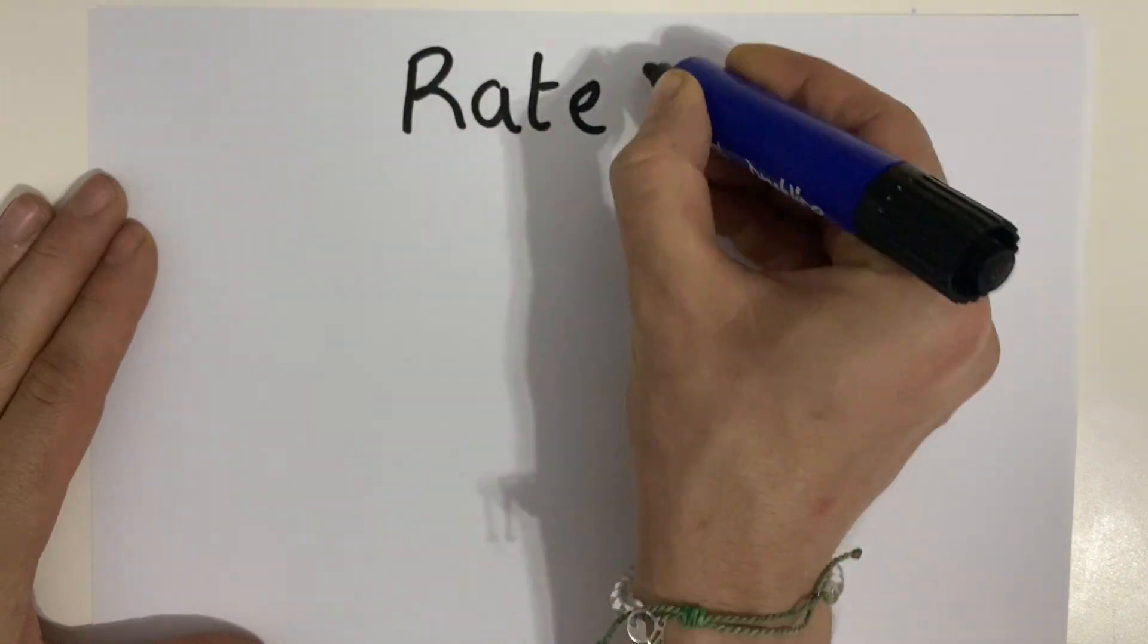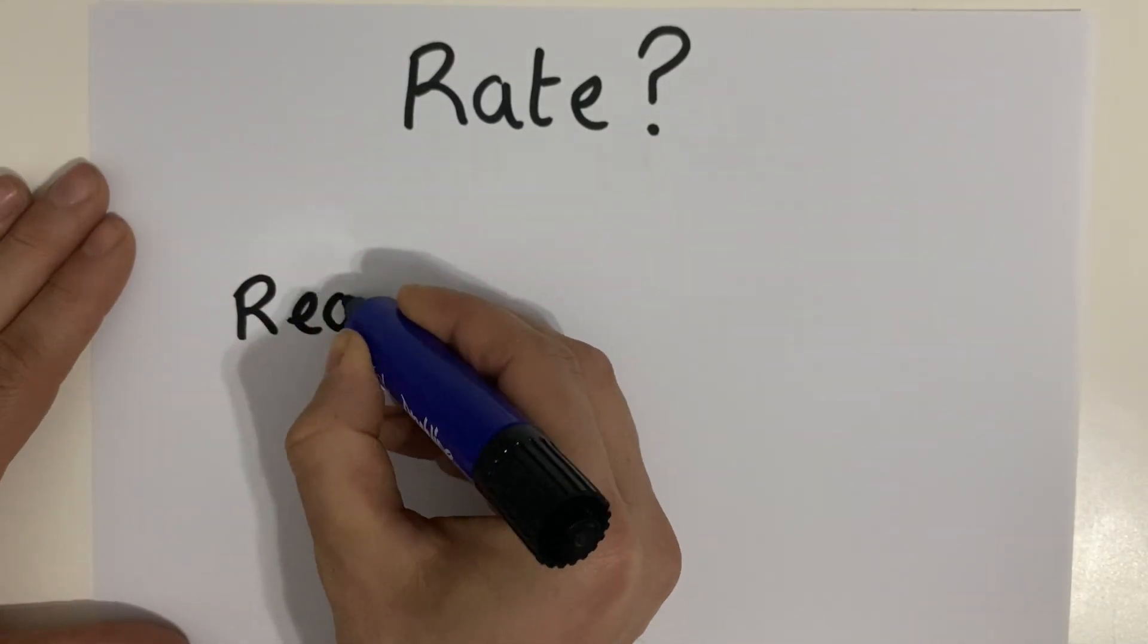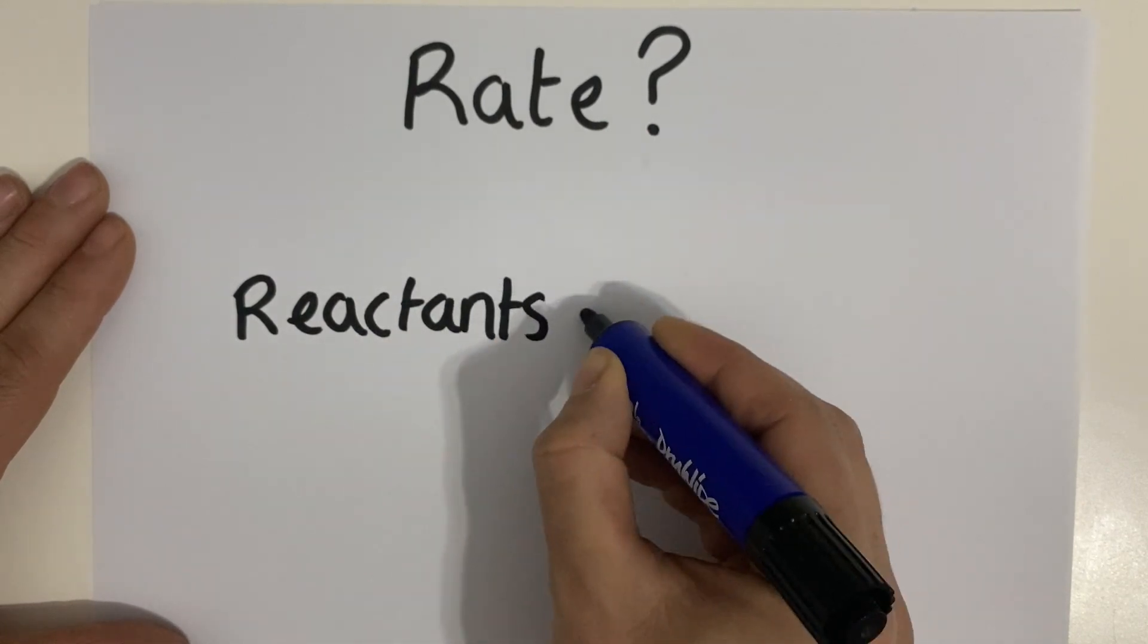Okay, so what exactly does rate mean? The rate of a chemical reaction is how quickly the reactants are converted into products.